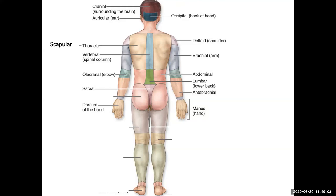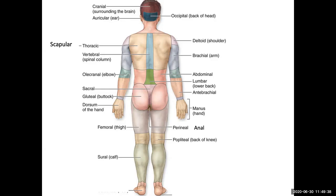Looking at the lower extremity from the posterior side, we start at the junction with the gluteal or buttock region, then the perineal or anal region. Once again we have the femoral. On the knee: the anterior side is the patellar, while the posterior side is the popliteal. Then we have a different name for the posterior leg — the sural, which is your calf region. We then get to the tarsals, then the calcaneal, and then the plantar surface of the foot.